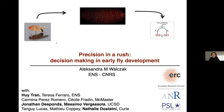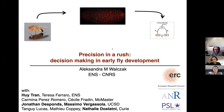Thank you. It's really been a great workshop, and I really wish we could do this in person. I'm going to talk about work that we've been doing for a while in collaboration with the group of Natalie Dostatny, an experimental geneticist who works on the fly. I'll present work done with her and Hui Tran, then move on to more theoretical ideas worked on with Jonathan Dupont and Massimo Vergasso.